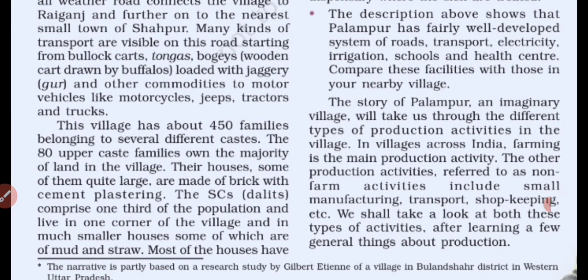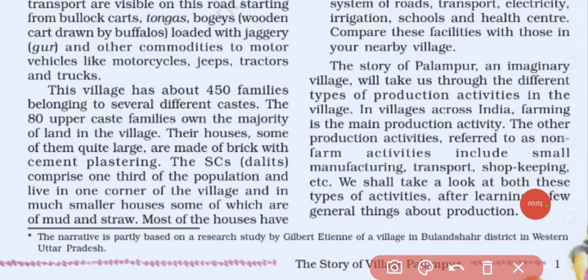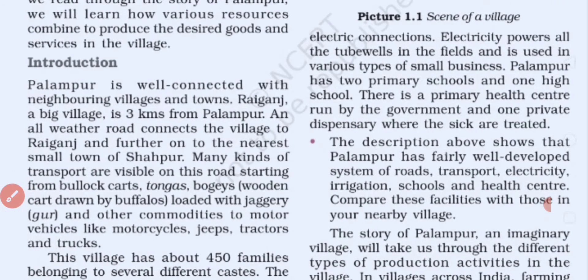The total number of families in the village is 450, and they are of different castes. Most of the houses are pucca houses, made of bricks and cement, and some are made of mud and straw. Most houses in the village have electricity, which powers the tube wells in the fields and is also used for small businesses.